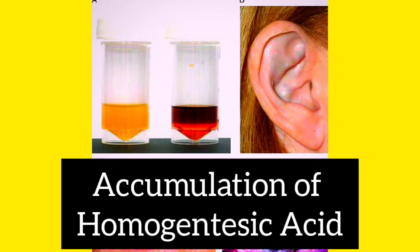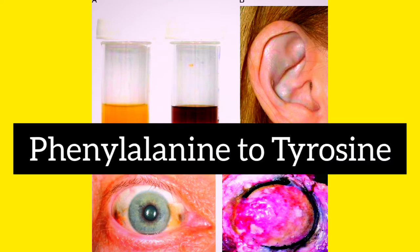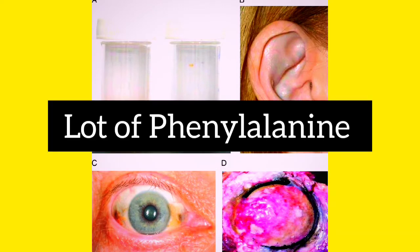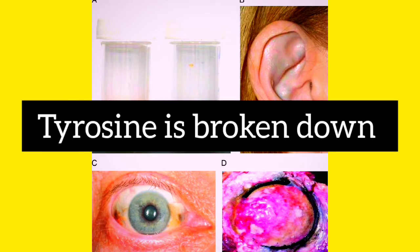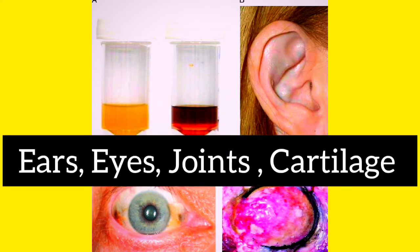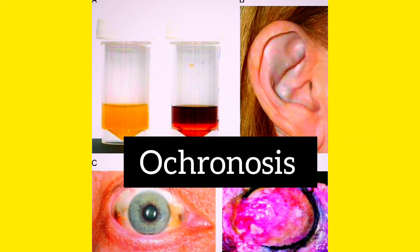Why does this occur? Due to accumulation of homogentisic acid. This occurs because there is a pathway where phenylalanine is converted into tyrosine, but here it is not properly converted. So a lot of phenylalanine accumulates, and tyrosine is broken down, leading to the formation of homogentisic acid, which accumulates in different parts of the body like the ears, eyes, cartilage, and joints.